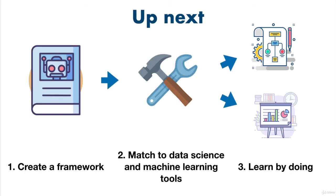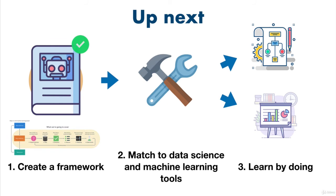Remember at the start how we said there were three major steps we were going to do: one, create a framework; two, match the framework to data science and machine learning tools; and three, learn by doing. Well, after going through the last couple of lectures, you've just ticked off step one. We've now got a framework to use for the modeling section of machine learning projects.